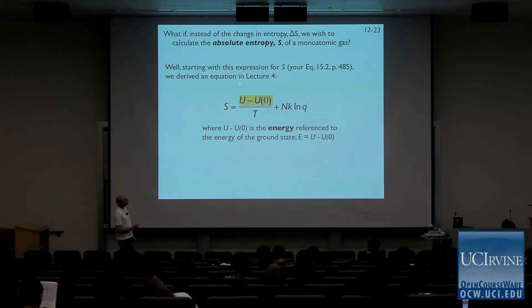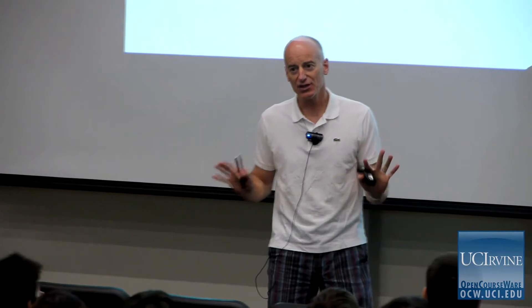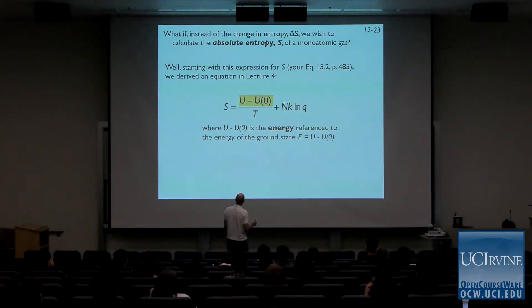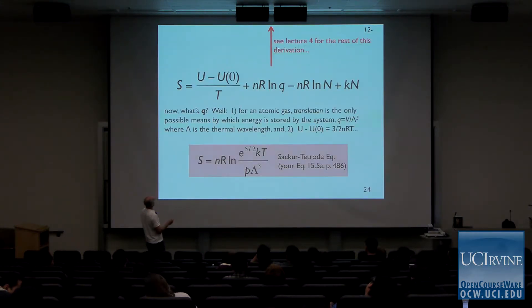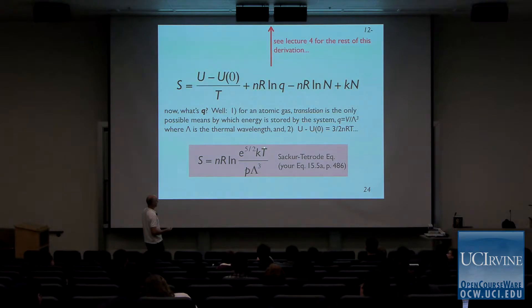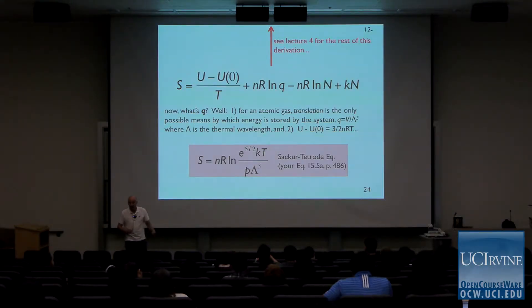Going back to lecture four: instead of a change in entropy, we can calculate the absolute entropy of a monoatomic gas. We derived an equation for this purpose, starting from the statistical definition and going through additional steps. This gives us the Sackur-Tetrode equation. Importantly, this is not a ΔS — it's an absolute entropy. Usually we calculate a change in entropy, but for a monoatomic ideal gas, the Sackur-Tetrode equation gives us the absolute entropy and anchors our entropy calculations.